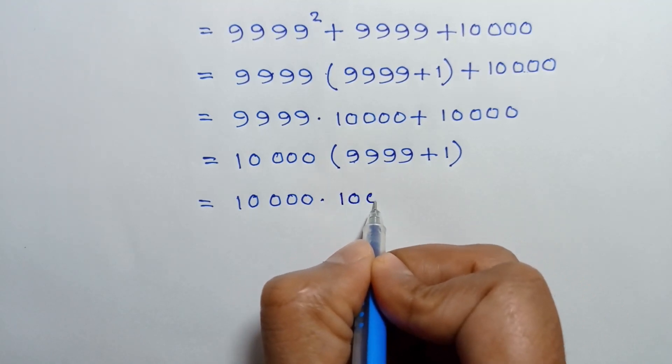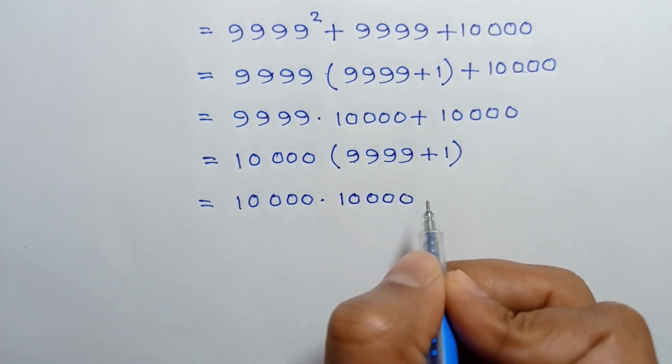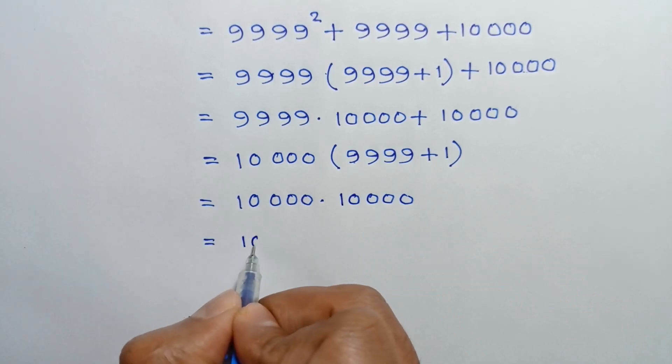So 10000 times 10000 is equal to 10 to the power 8.